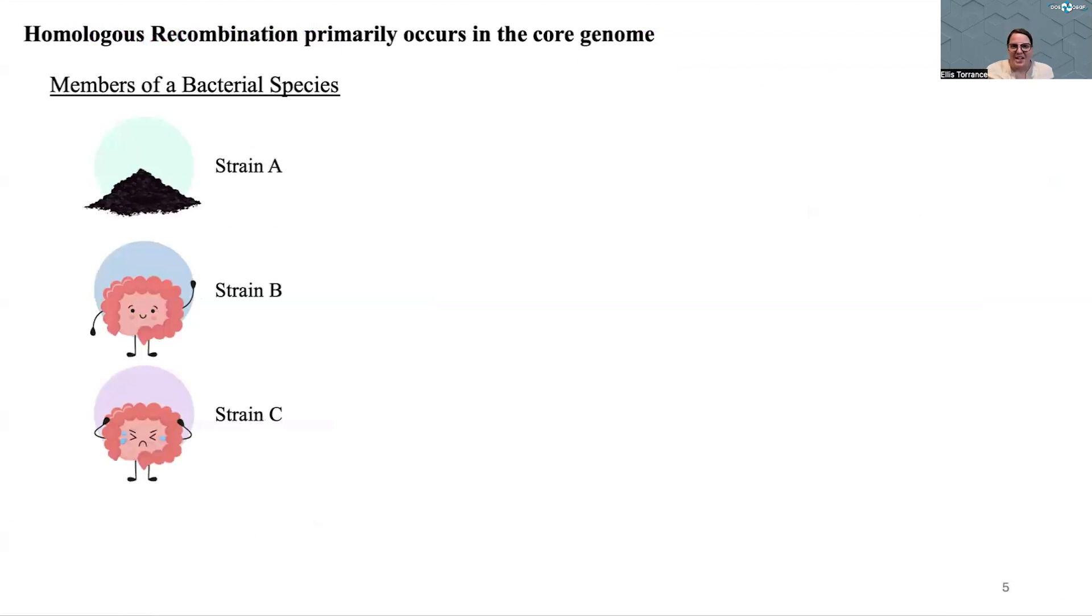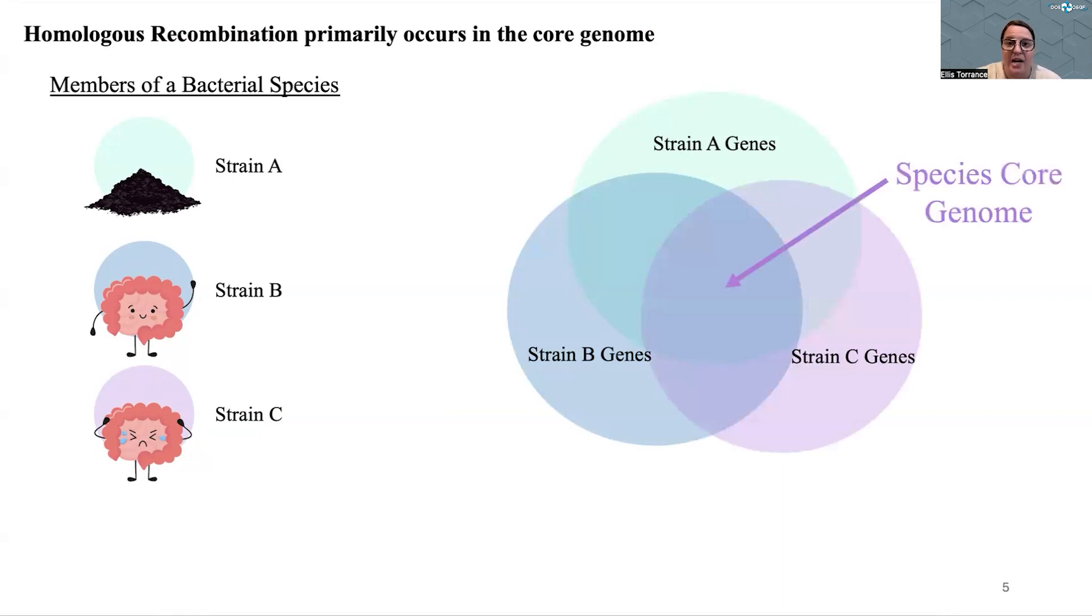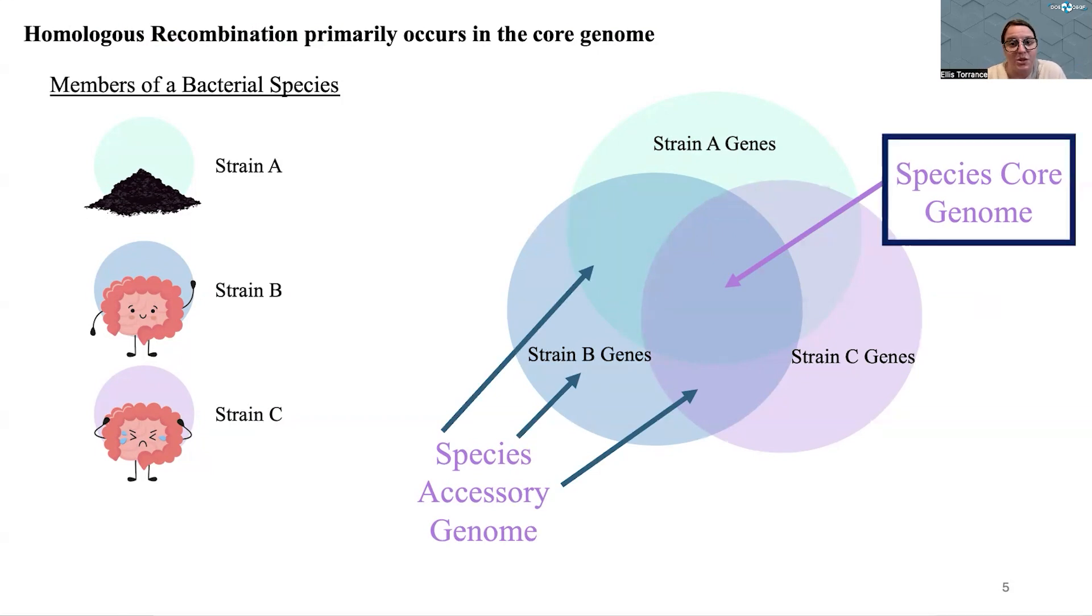I study homologous recombination, and that's mostly occurring within a species and within the core genome of that species. If I have three different strains here—strain A lives in the dirt, strain B lives in the gut, and strain C also lives in the gut but maybe makes it not that happy—if I represent strain A, B, and C genes as circles, the core genome would be the set of genes shared by all individuals within that species, whereas the accessory genome is all that extra stuff that allows them to live in different environments, really represents the stuff that's going to be horizontally transferred.